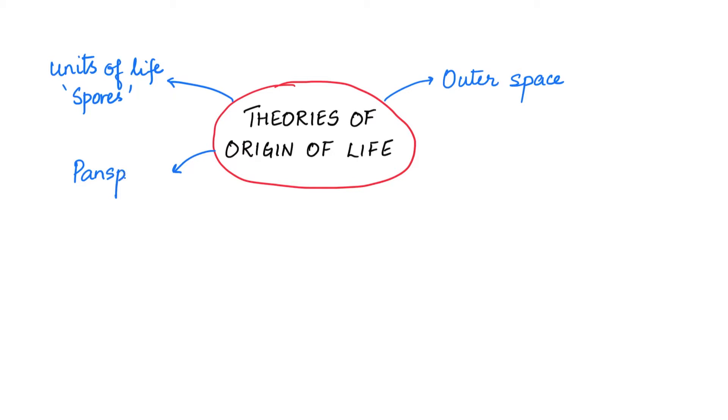Some astronomers believe in the theory of panspermia, i.e. life existed throughout the universe in the form of space dust, meteoroids, asteroids, etc.